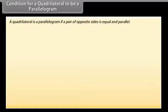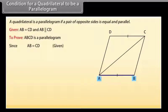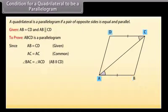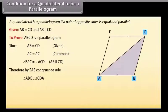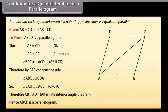Condition for a quadrilateral to be a parallelogram: A quadrilateral is a parallelogram if a pair of opposite sides is equal and parallel. Given AB = CD and AB is parallel to CD, draw diagonal AC. Since AB = CD, AC = AC (common), and angle BAC = angle ACD (AB parallel to CD), by SAS rule triangle ABC is congruent to triangle CDA. So angle CAD = angle ACB, therefore CB is parallel to AD. Hence ABCD is a parallelogram.